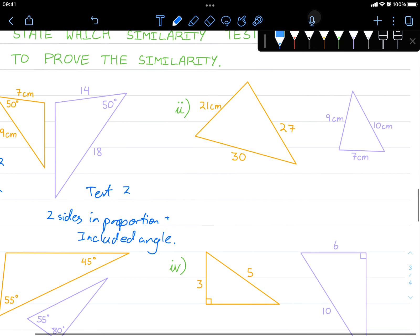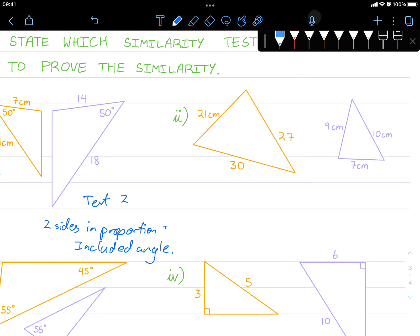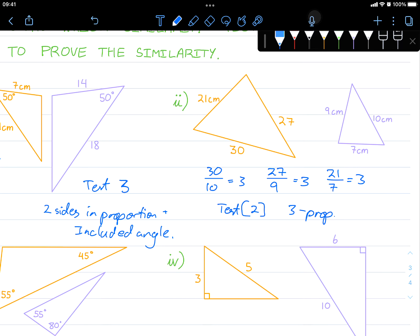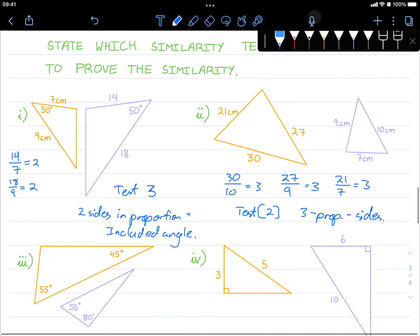This one's not so bad. Let's take a look. The largest side is 30. Let's divide it by the largest side in the purple triangle. So 30 divided by 10, that's 3. 27 is the second largest. So 27 over the second largest here is 9. 27 divided by 9 is 3. And you can probably take a guess. 21 is the smallest side here. 21 over 7, because that's the smallest side in the purple triangle. That's also 3. So this is 3 proportional sides. That is test 2.